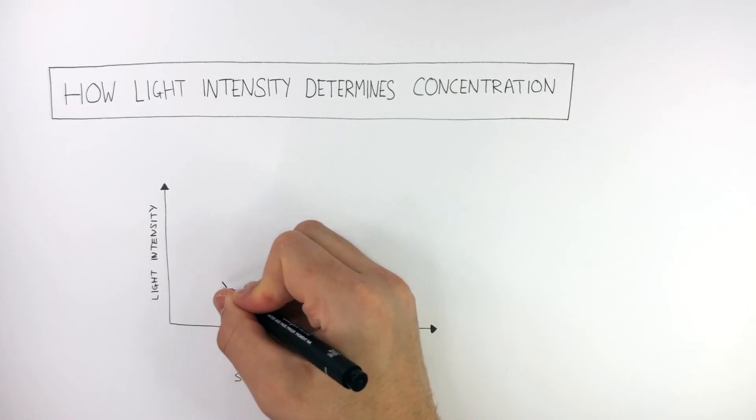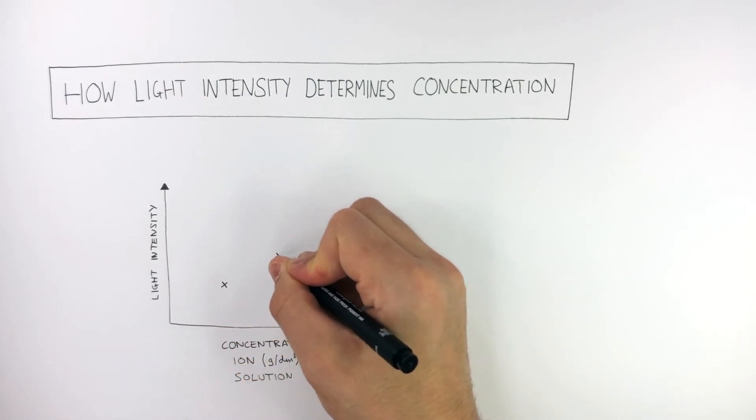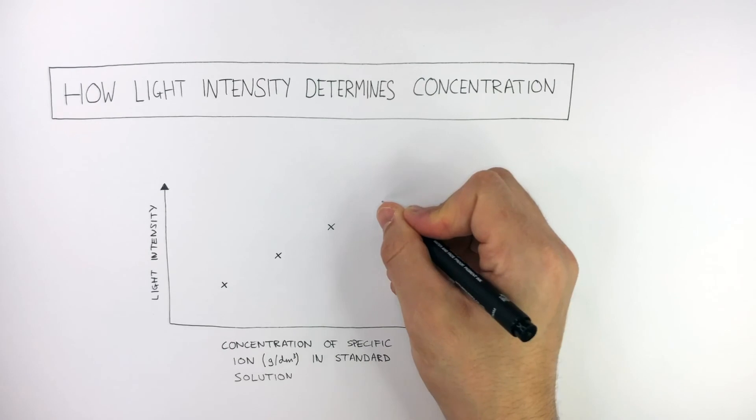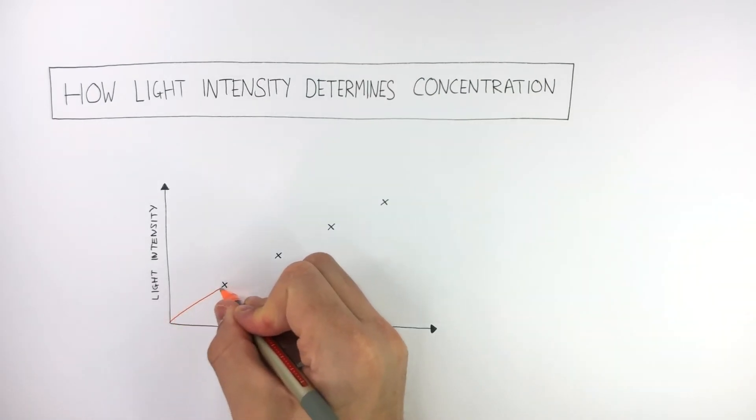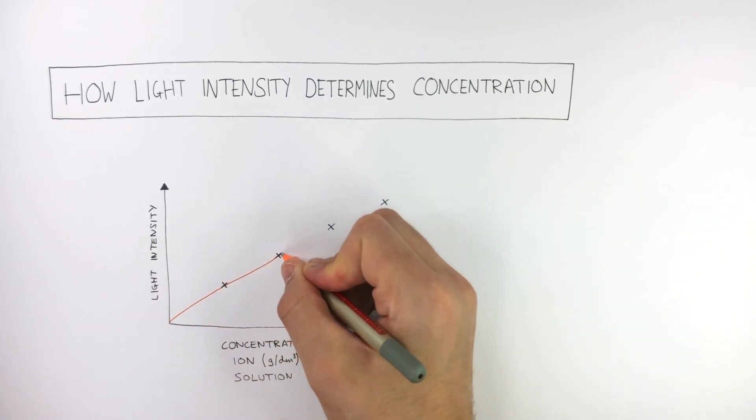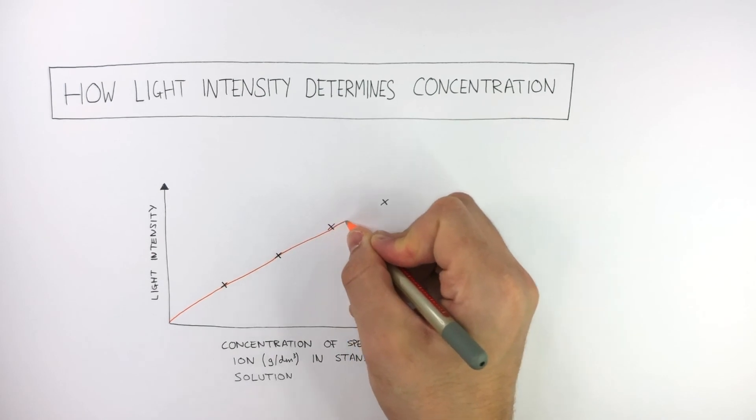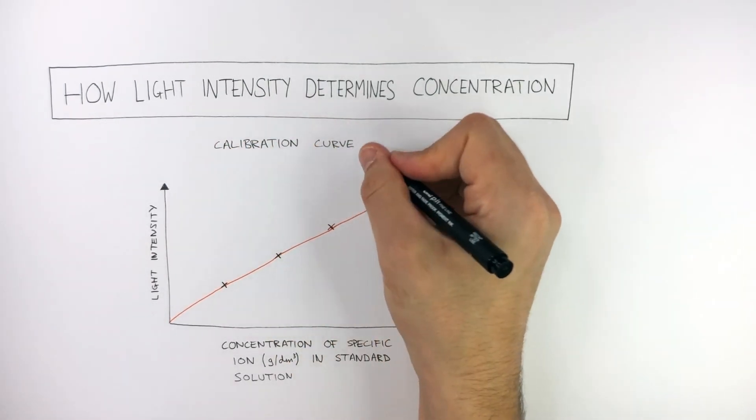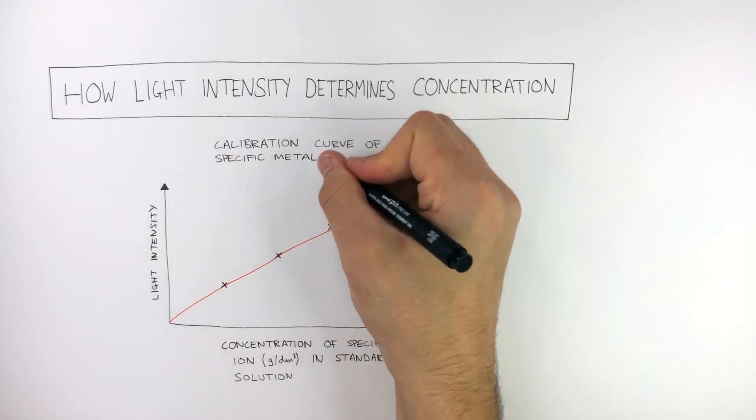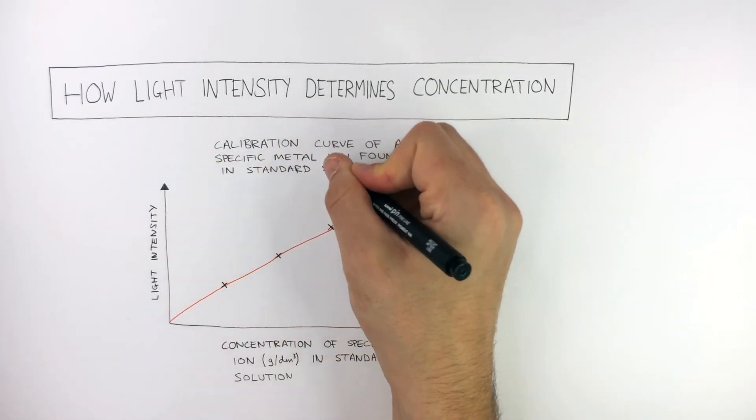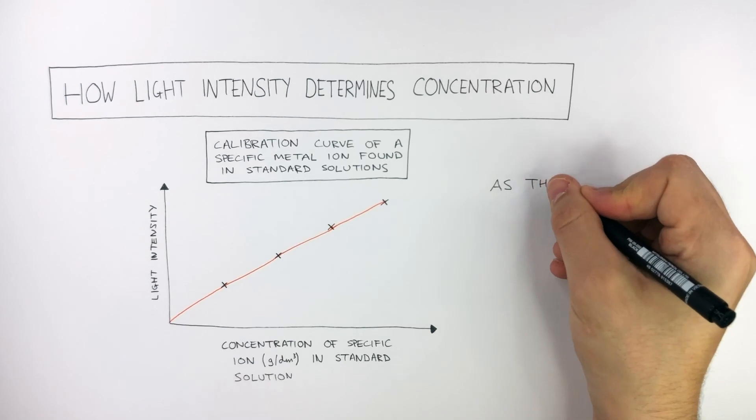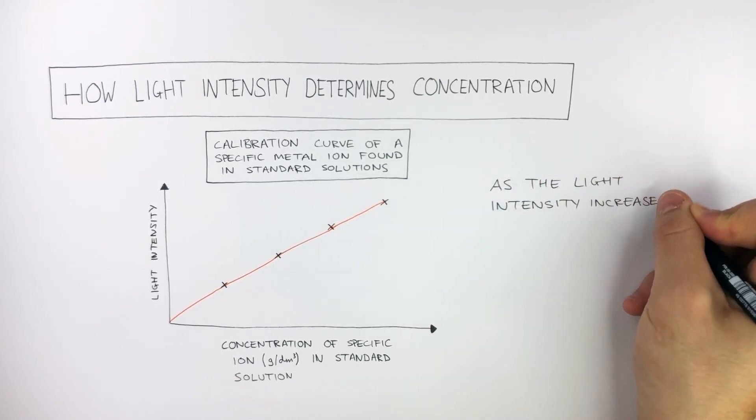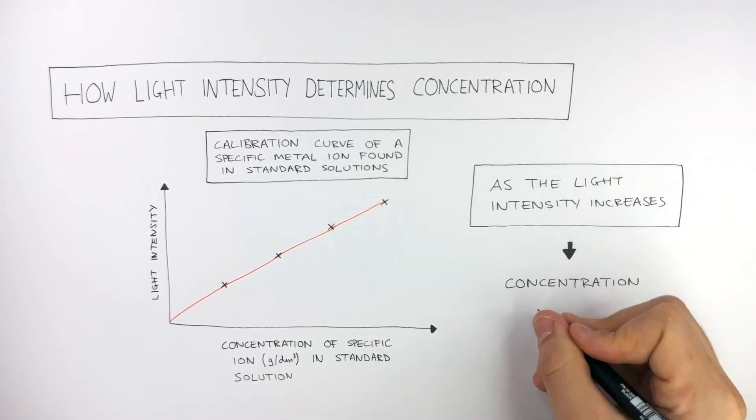As the concentration of the metal ion increases, the light intensity increases. This calibration curve shows that concentration and light intensity are directly proportional for a specific metal ion found in standard solutions.